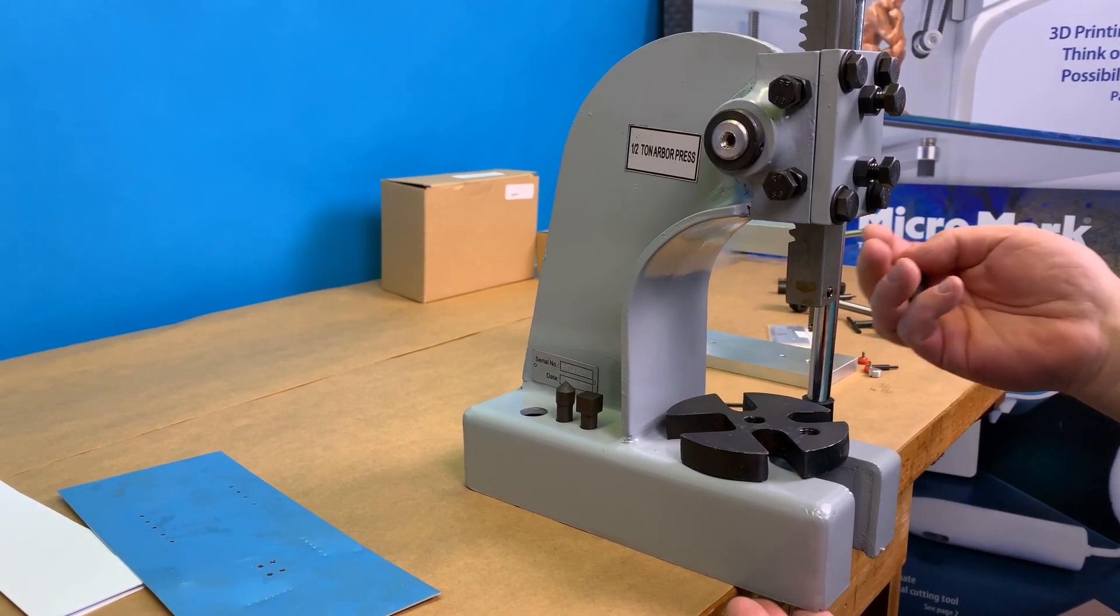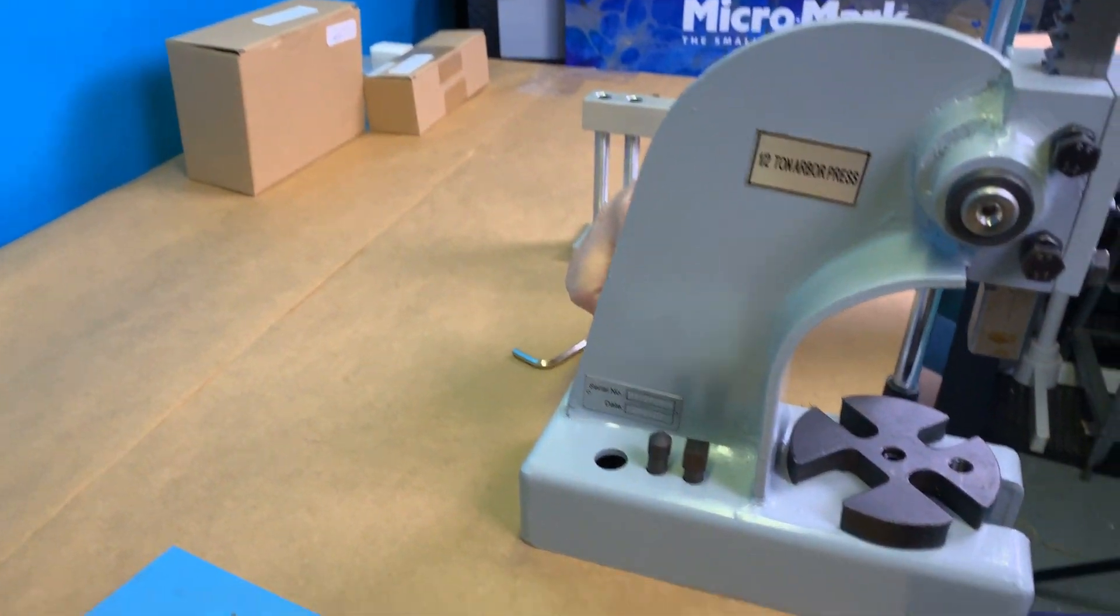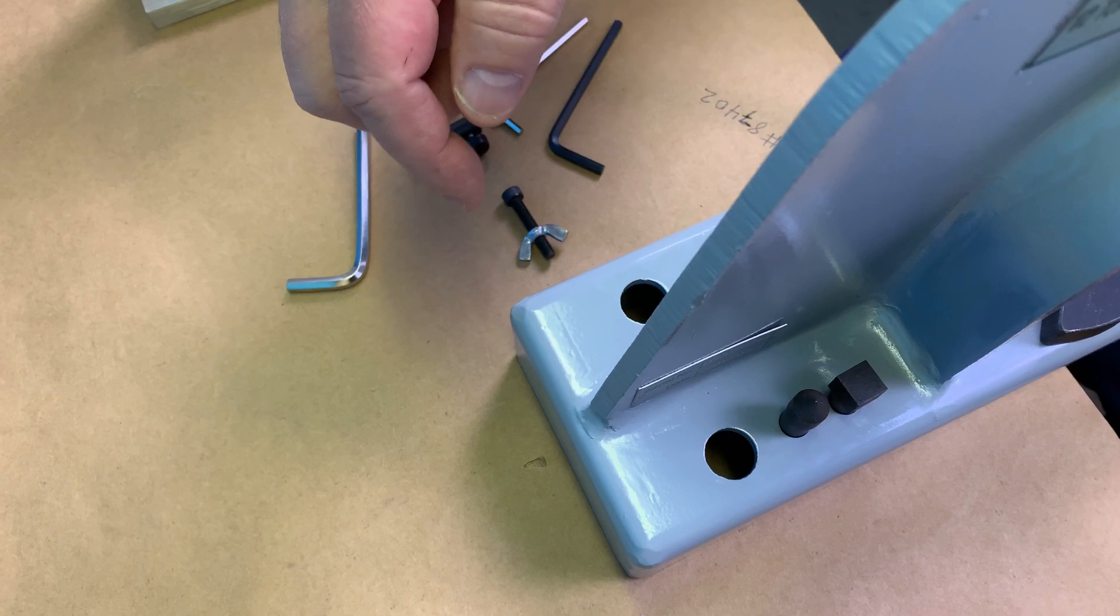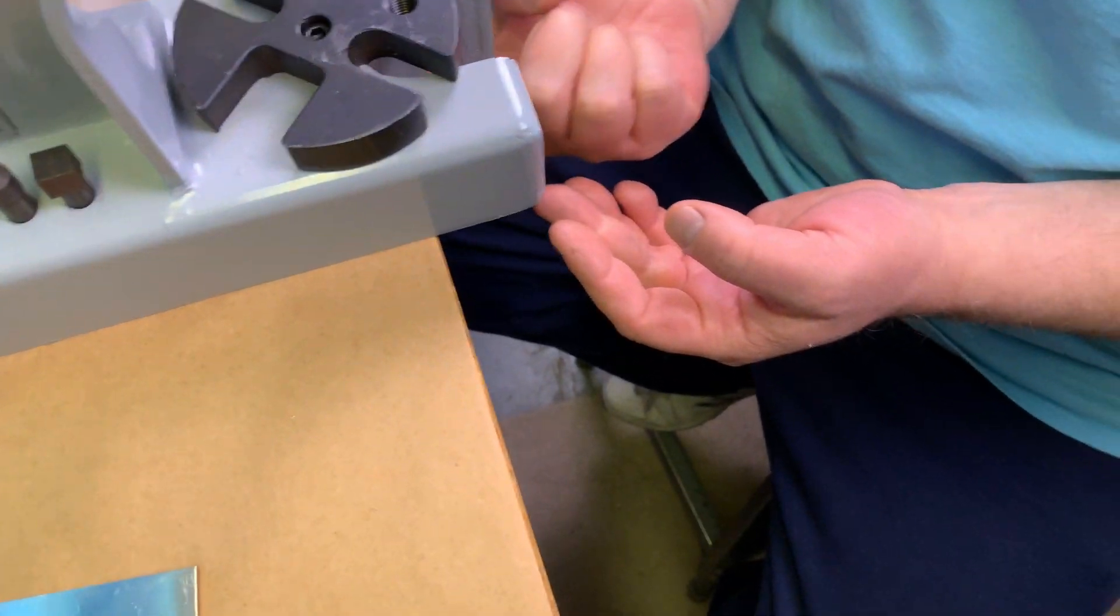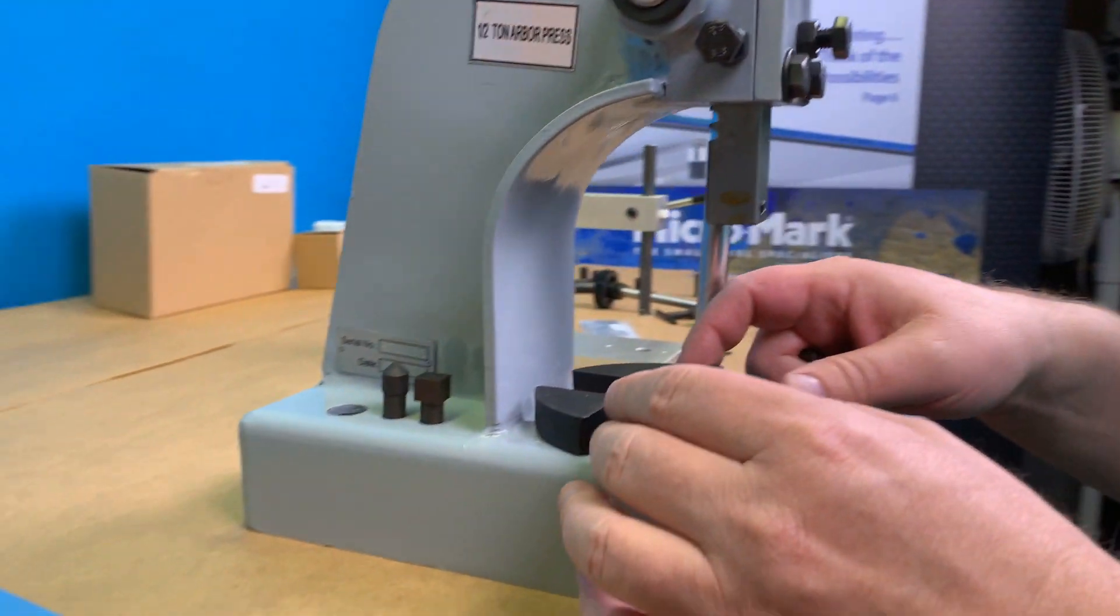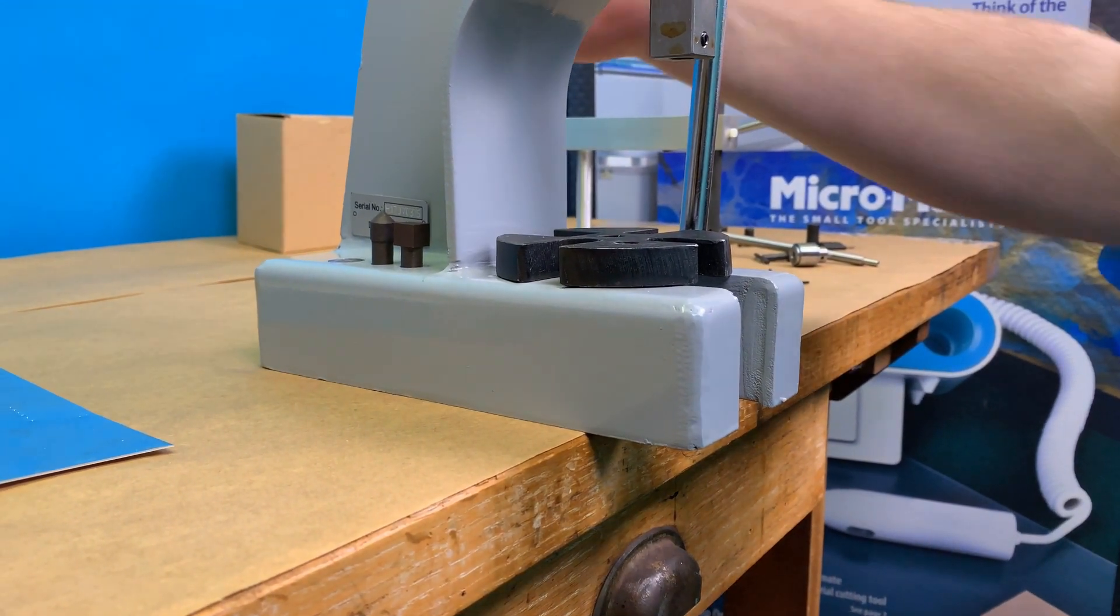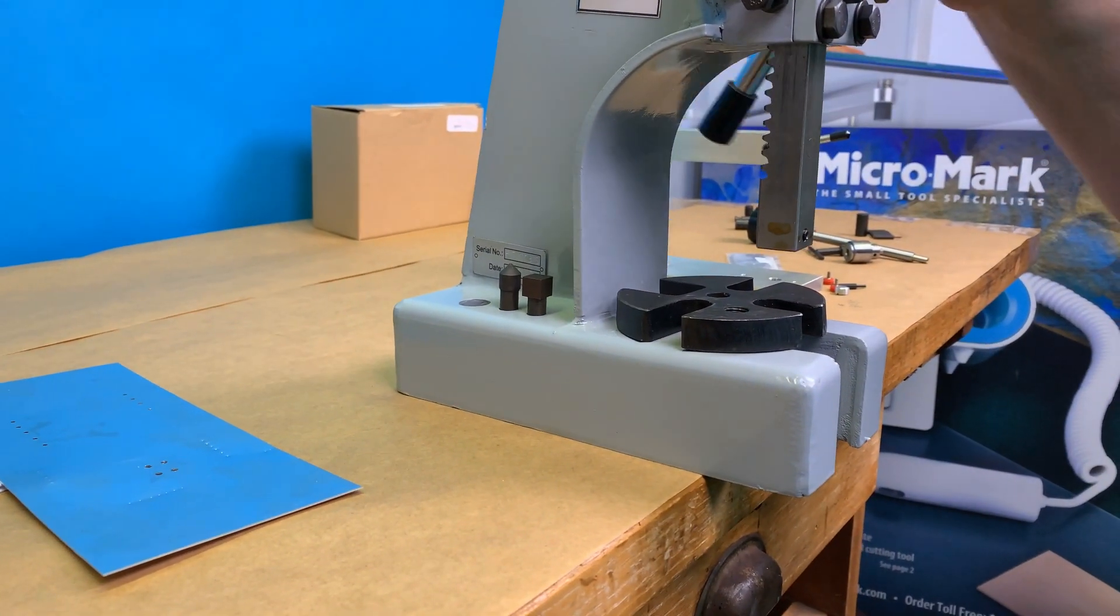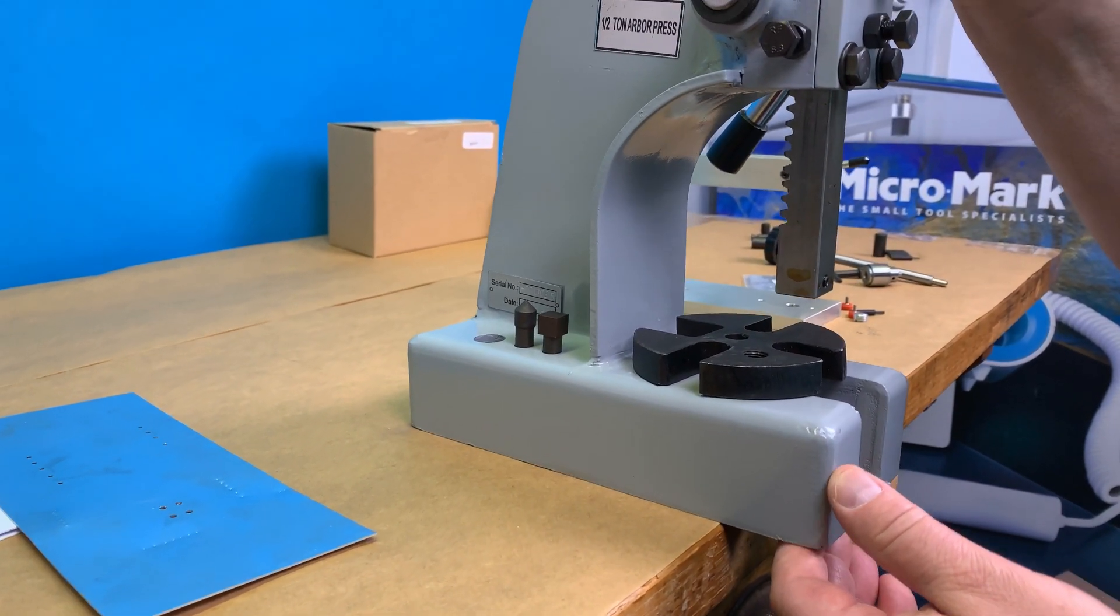It's appropriate now that we talk about how to mount the arbor press to your bench. There are two holes located in the back side, one on either side. You want the unit to overhang the front of your bench because you may need access to this area for different punching and pressing applications. You need to make sure whatever you use firmly holds the unit in place because the force of the ram will want to pick up the back side. Mounting is very important.